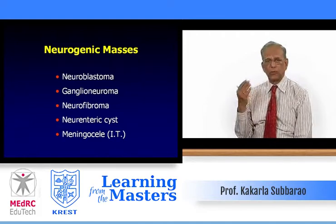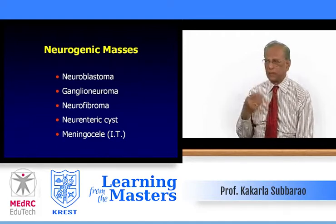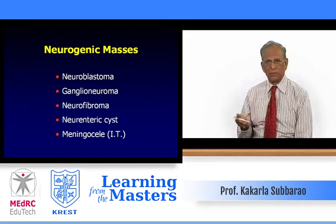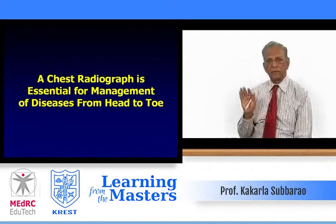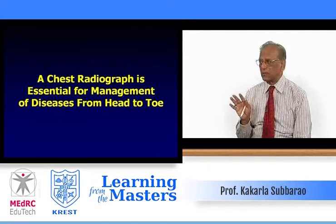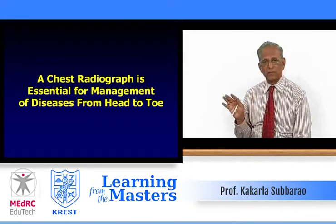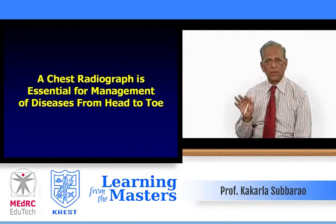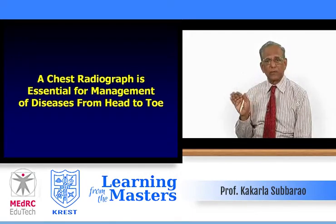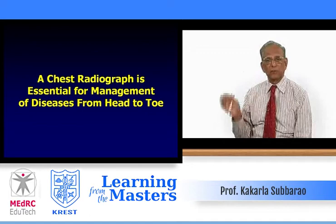To review the neurogenic masses: neuroblastoma, which is malignant; ganglioneuroma; neurofibroma or schwannoma; neuroenteric cysts; and meningoceles. A chest radiograph is essential for management of diseases — always take a chest film, and once chest findings are ruled out, proceed further.